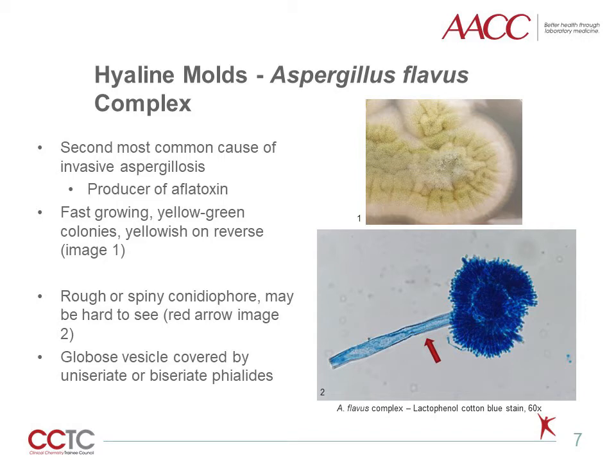Aspergillus flavus is the second most common cause of invasive aspergillosis and a major producer of aflatoxin. It grows fast, forming bright yellow-green colonies, as seen in image one, with yellow on the reverse. Microscopically, it has a rough or spiny conidiophore that can be hard to see, as in image two. The vesicle is globose and completely covered by uniseriate or biseriate phialides.